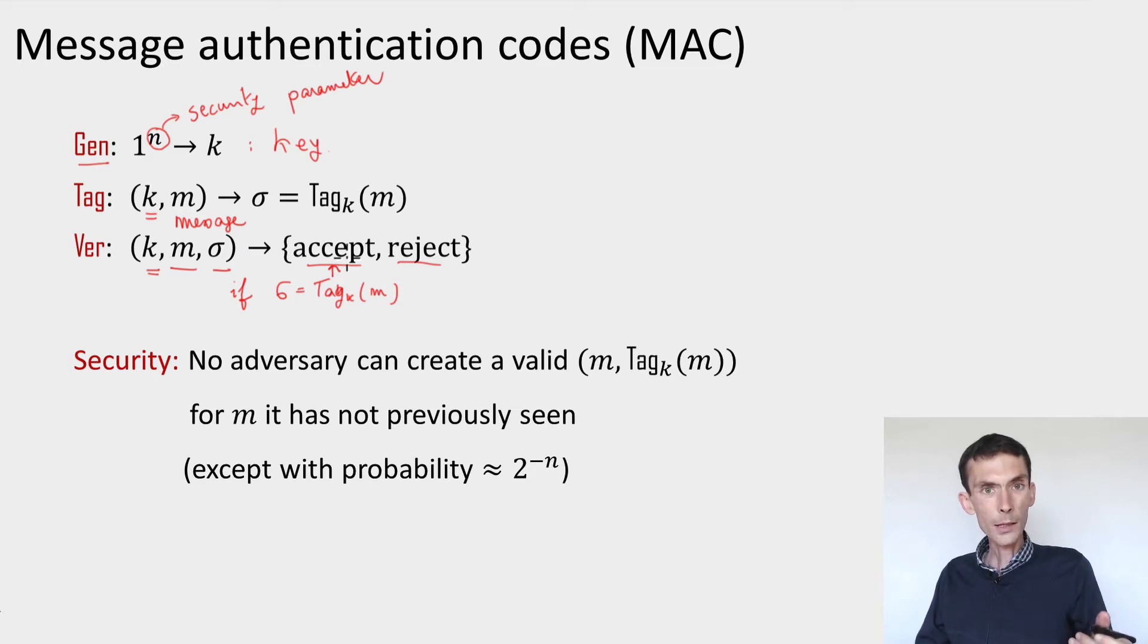So now what's security of a message authentication code? We'll say that the MAC is secure if no adversary—and what is the adversary given access to? The adversary doesn't have access to the key, but what it has, it has access to a certain number of message tag pairs. These are things that it could have learned by listening in on a communication channel. So the adversary sees a bunch of m sigma pairs that are valid.